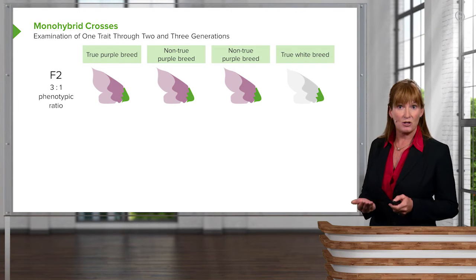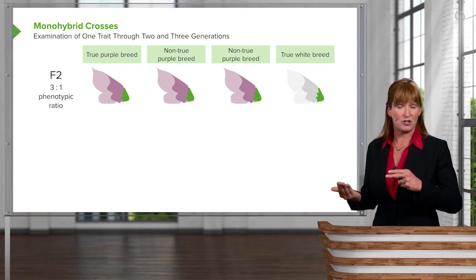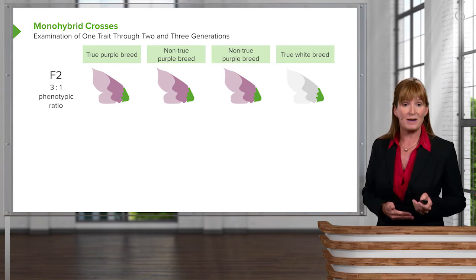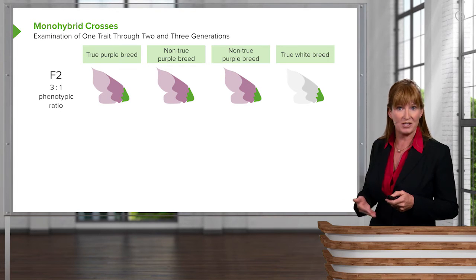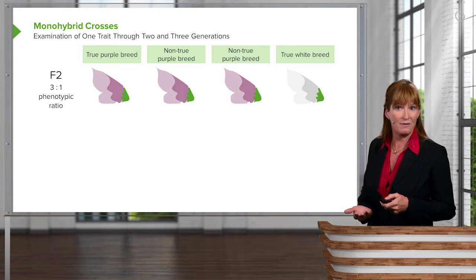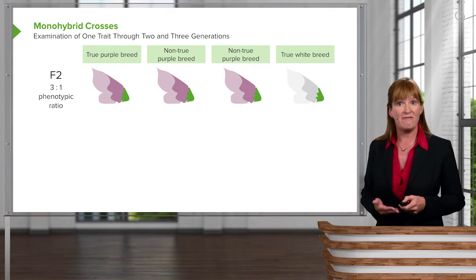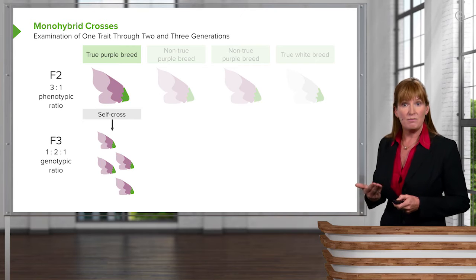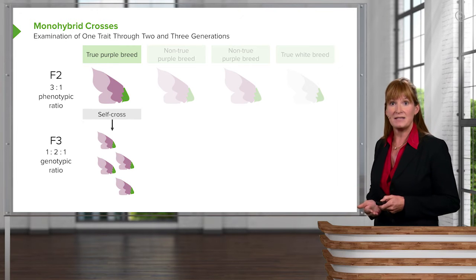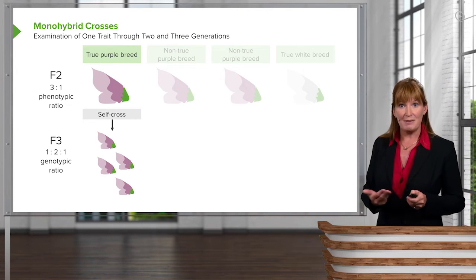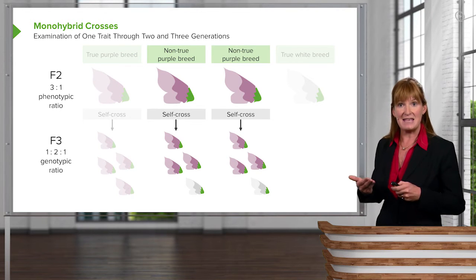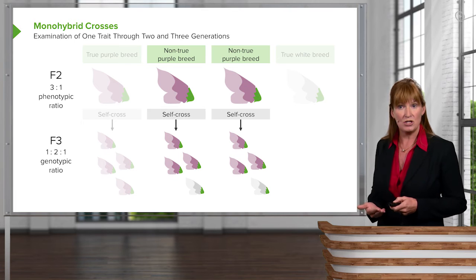Mendel came to these conclusions about the two factors moving separately during gamete formation because when he took his F2 offspring and crossed them, he found that the true breeding plants, when self-fertilized, would produce all true breeding plants. When he crossed some of the others with themselves and self-fertilized, he would find that the white would reemerge.